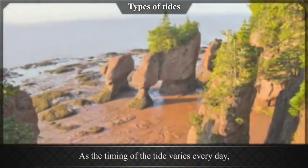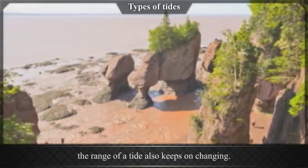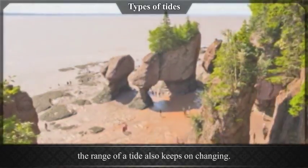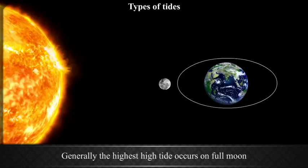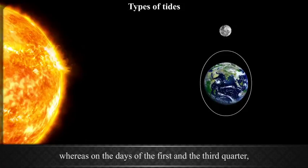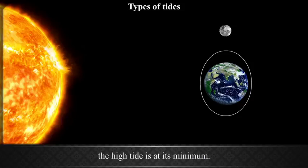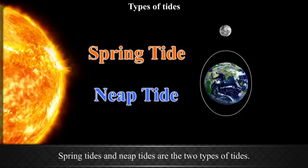Types of Tides. As the timing of the tide varies every day, the range of a tide also keeps on changing. Generally, the highest tide occurs on Full Moon and New Moon days, whereas on the days of the 1st and the 3rd quarter, the high tide is at its minimum. Spring tides and neap tides are the two types of tides.